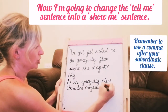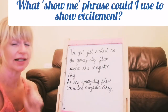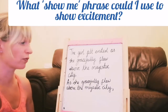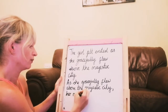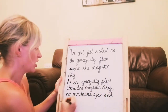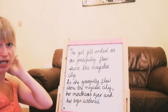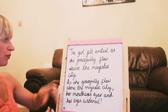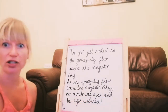I need a comma now to show the end of my subordinate clause, ready for my main clause. I'm not going to put 'the girl felt excited' because that tells me — I'm going to put a show me phrase instead. Thinking about what my three children looked like when they were excited, I'm going to use: her mouth was ajar, and her eyes widened. And then I could put a full stop, or even an exclamation mark, because that's showing me how excited she was. So it's changed from 'The girl felt excited as she gracefully flew above the majestic city' to 'As she gracefully flew above the majestic city, her mouth was ajar and her eyes widened.'